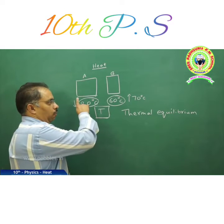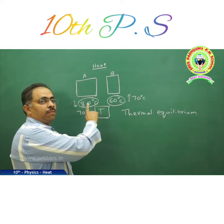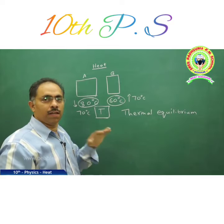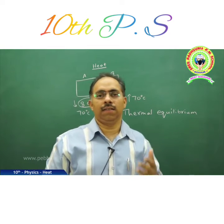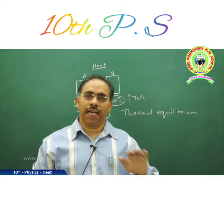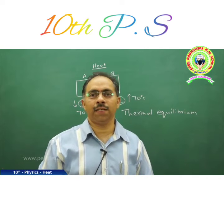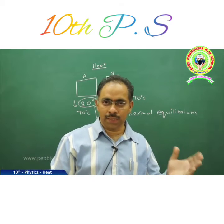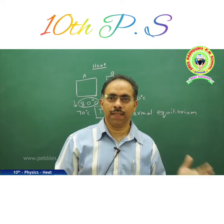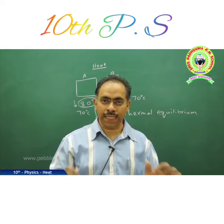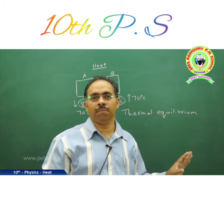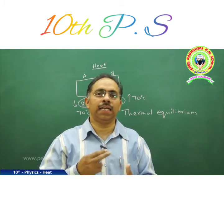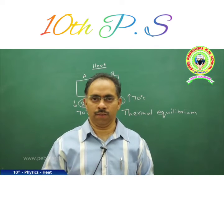Once thermal equilibrium is attained, the two bodies have been in contact and heat has flowed from one to the other. We can define heat as a form of energy in transit, which flows from a body at higher temperature to a body at lower temperature until both bodies attain thermal equilibrium. Here, the concepts of heat and thermal equilibrium are both involved.